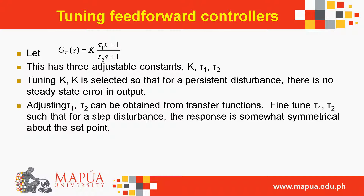Tuning feedforward controllers: let GF(s) = K · (τ1·s + 1)/(τ2·s + 1). This has three adjustable constants: K, τ1, and τ2. Tuning K: K is selected so that for a persistent disturbance there is no steady-state error in the output. τ1 and τ2 can be obtained from transfer functions, then fine-tuned so that for a step disturbance the response is somewhat symmetrical about the set point.